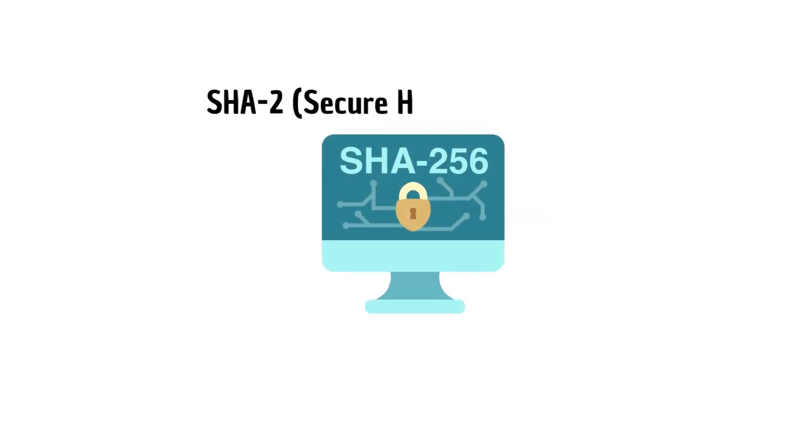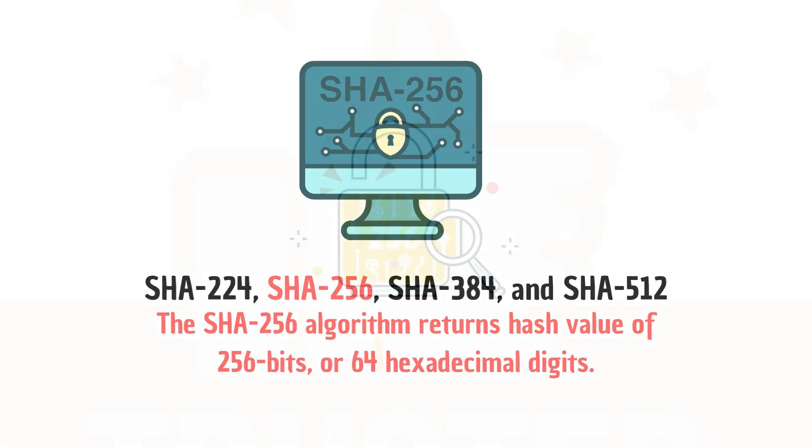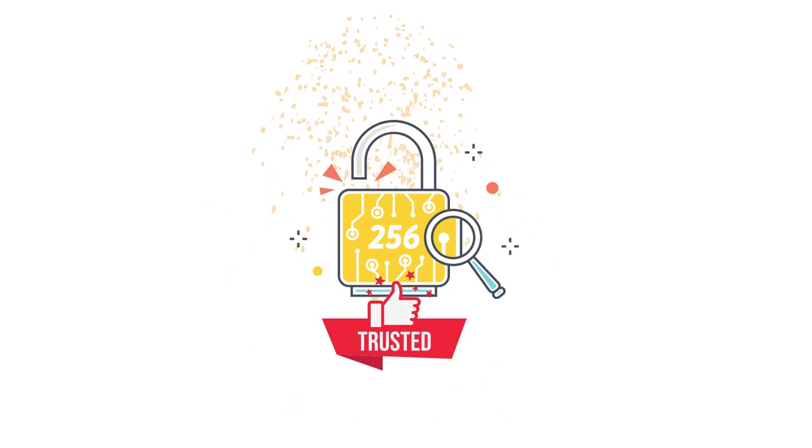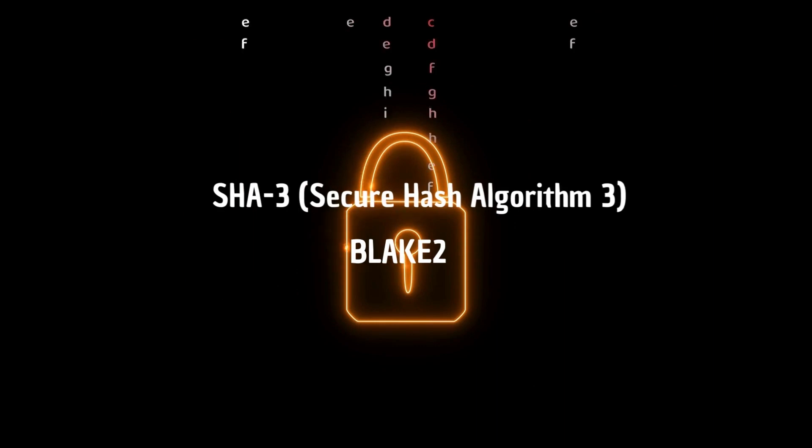SHA-2, developed in 2001, is a family of hash functions that includes several variants, including SHA-224, SHA-256, SHA-384, and SHA-512. These functions produce digests of varying lengths and are considered more secure than MD5 and SHA-1. SHA-3 and Blake-2 are other hash algorithms used today.